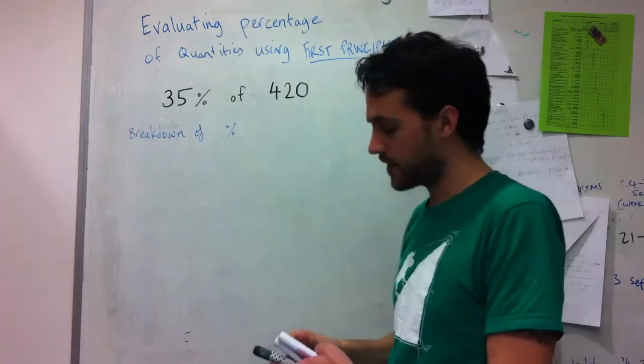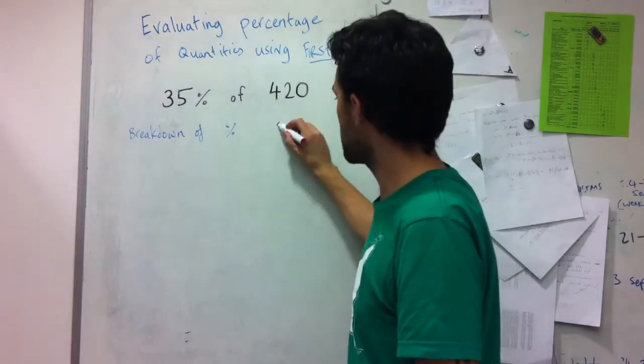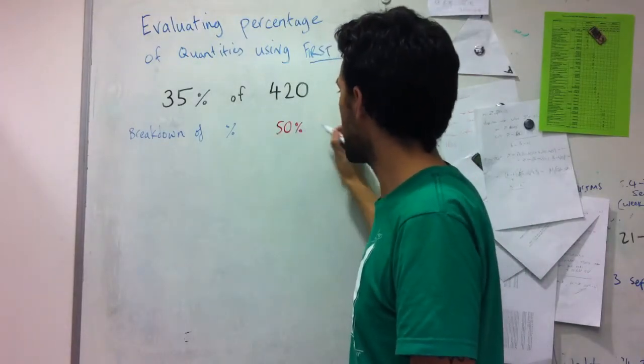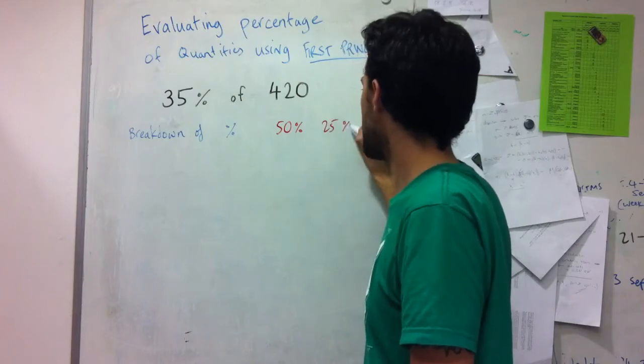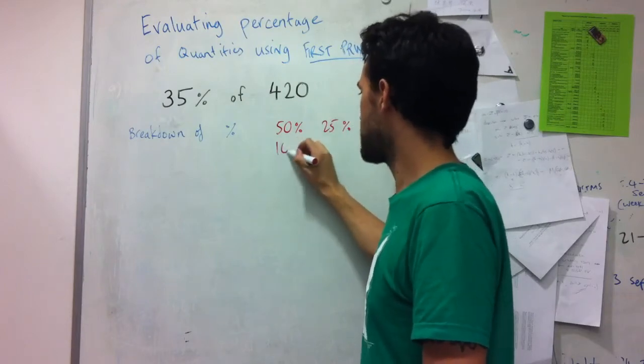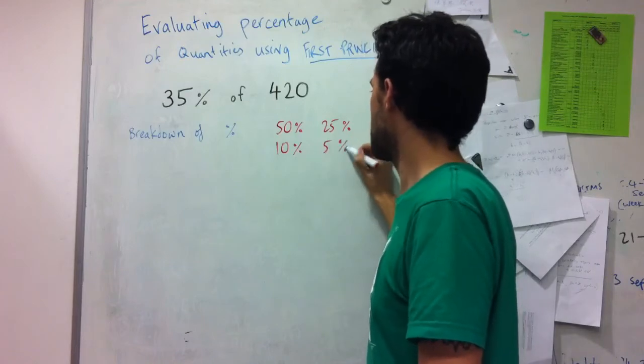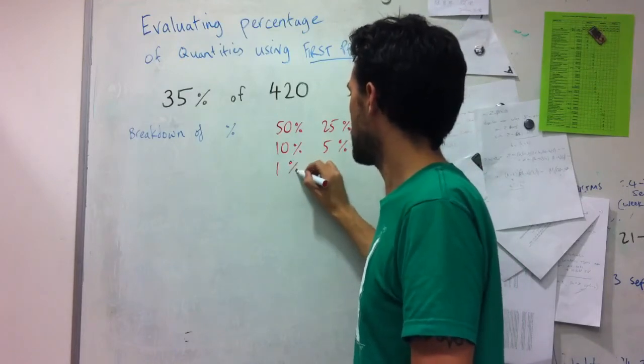So these sorts of percentages that we can get to include things like 50% by halving and 25% by halving that. Things like 10% and 5%, 1%, all these.